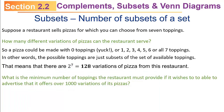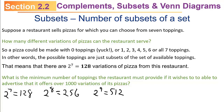What is the minimum number of toppings the restaurant must provide to advertise over a thousand variations? Seven toppings gives only 128 — not enough. 2^8 = 256, still not enough. 2^9 = 512, still not enough. But 2^10 = 1024, which finally passes a thousand. So the restaurant would need at least ten toppings to legitimately advertise over a thousand variations.